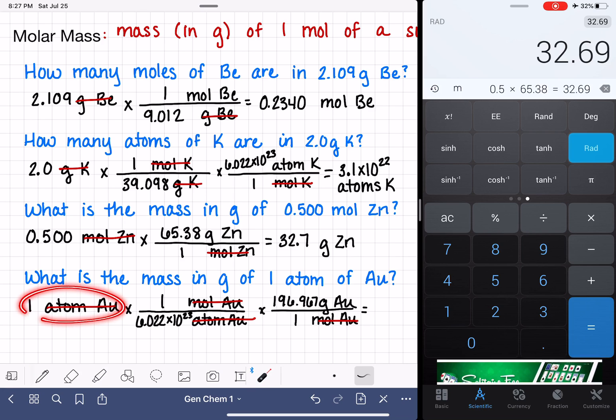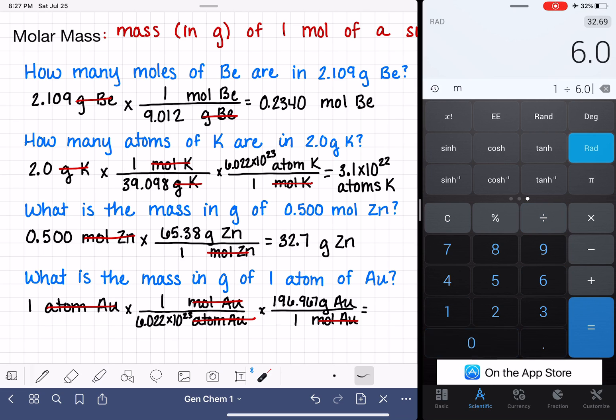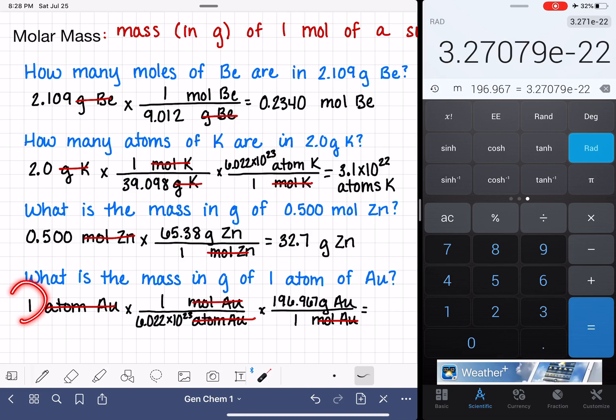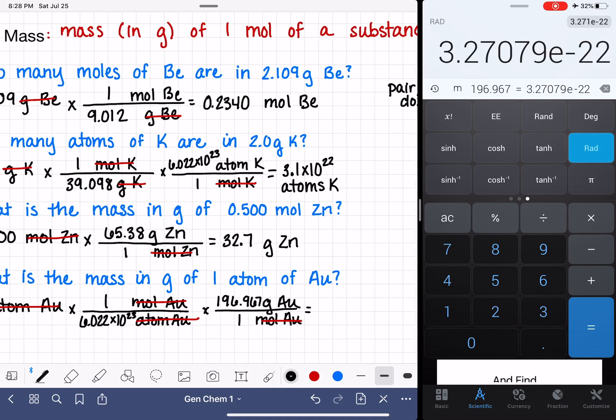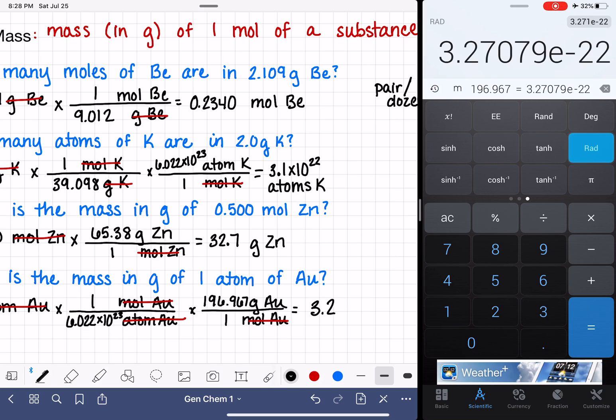For our last problem, we have 1 divided by 6.022 times 10 to the 23rd times 196.967. We have 1 sig fig. Well, actually, this is a counted number. So this is actually an infinite number of significant figures. We have 4 sig figs here and 6 right here. So we're restricted to four significant figures. And so that will be 3.271 times 10 to the negative 22 grams of gold.